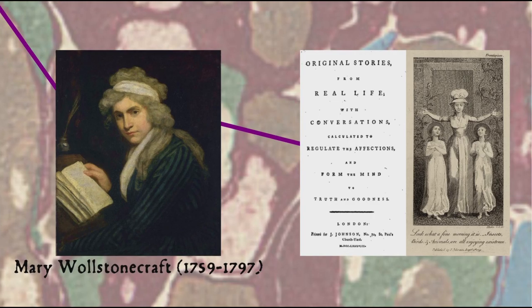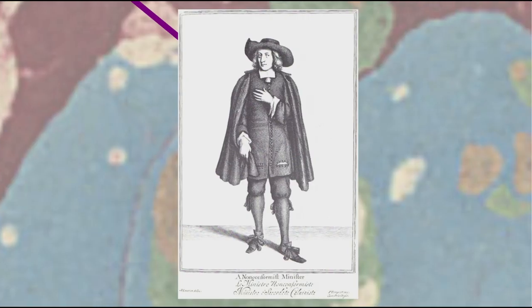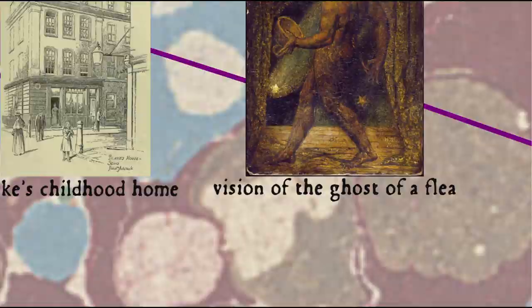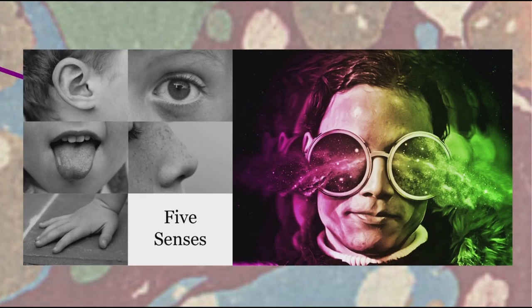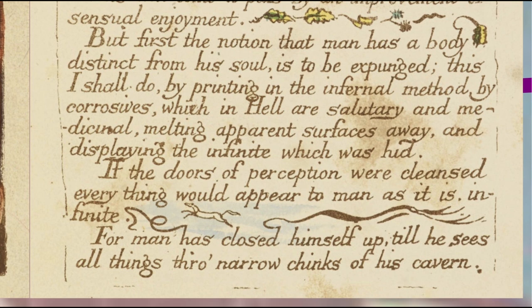Blake was not only a political radical — for instance doing illustrations for one of Mary Wollstonecraft's works — but was also a religious nonconformist, and had very unusual and idiosyncratic views, which led many of his contemporaries to believe that he was mad. From childhood he was prone to spiritual visions, and later was also interested in perception, making a distinction between seeing with the eye — in other words sense perceptions — and seeing through the eye, or imaginative perception. In this regard he is famous for his phrase, 'if the doors of perception were cleansed, everything would appear to man as it is, infinite,' pointing out the limitations of human sense perception in comparison to the infinite nature of reality.